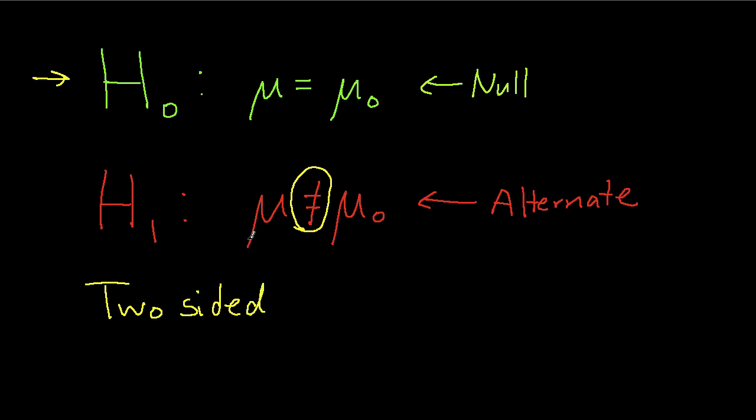The reason it is called a two-sided test is because the alternate hypothesis is that the actual population mean is larger than or smaller than mu zero.